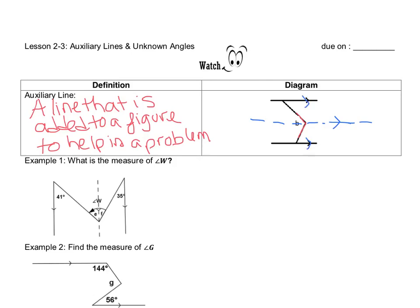So, if you look at example 1, we want to find the measure of angle W. Angle W is this entire angle here. Okay, so if we want to find the measure of angle W, they already drew in this auxiliary line for us. So, the dotted line is the auxiliary line.